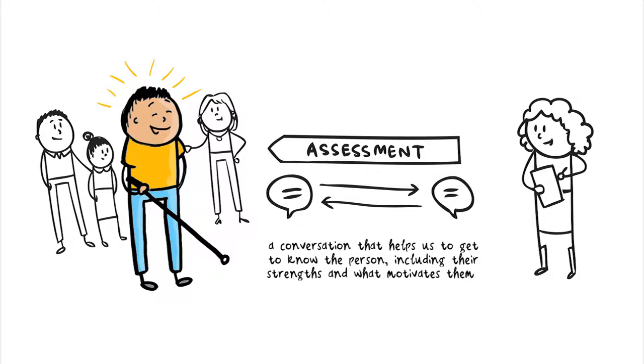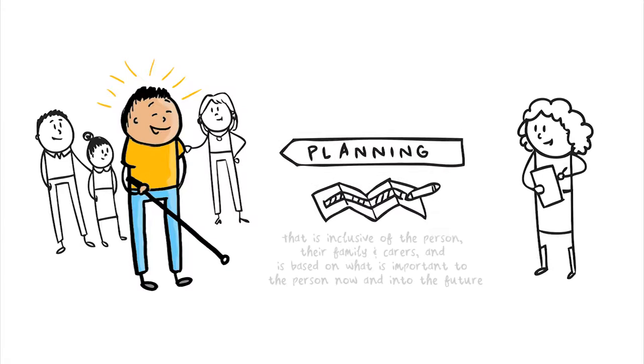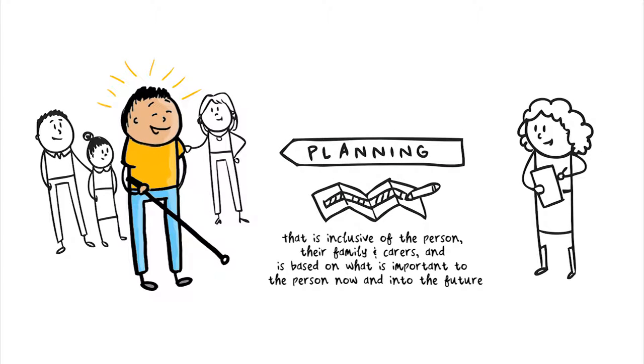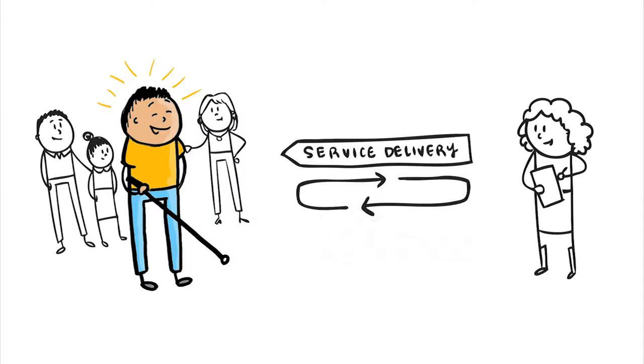Assessment – a conversation that helps us get to know the person, including their strengths and what motivates them. Planning – that is inclusive of the person, their family and carers and is based on what is important to the person now and into the future. And service delivery – that is flexible and responsive to the individual needs of the person and includes regularly checking in to find out how things are going.